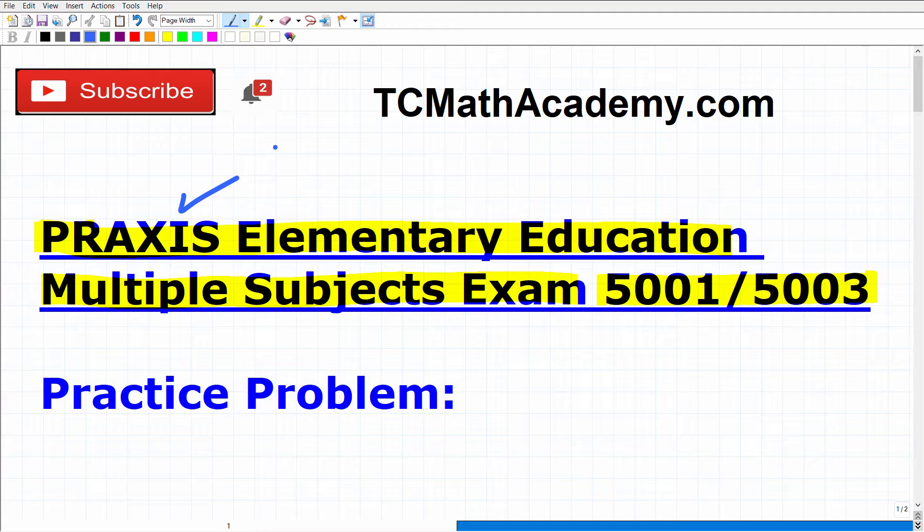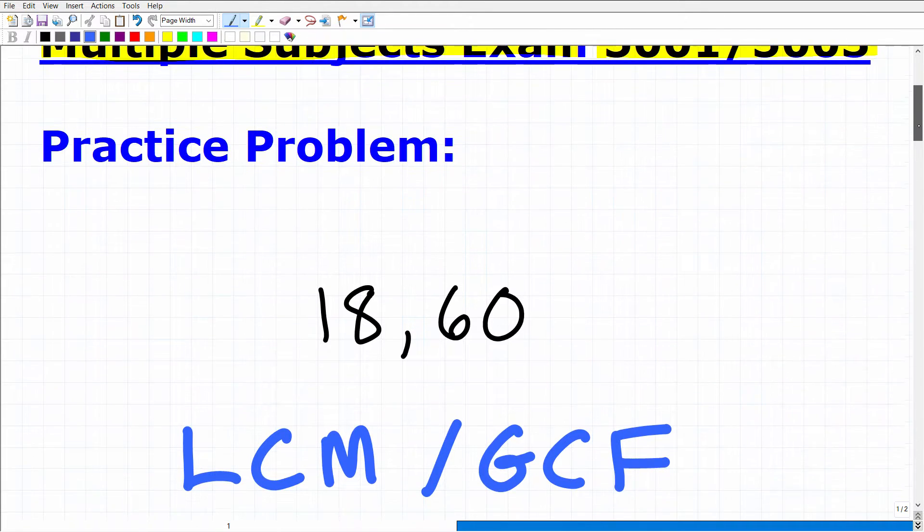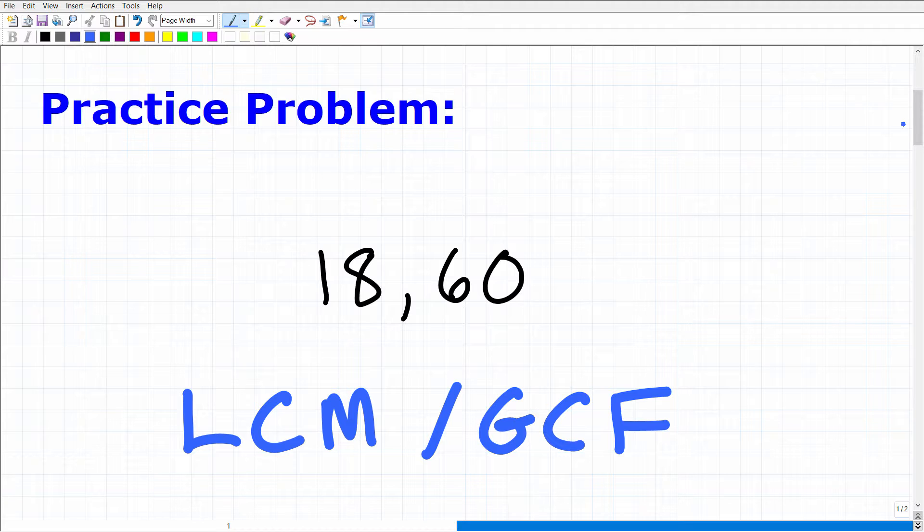And what I have for you here is a practice problem. I'll show it to you in a second that you should be able to answer pretty easily if you are fully prepared for this exam. Now, let me actually just show you the problem right now. So if you want to pause the video, you can work on it. So what we're going to be doing here, I have two numbers, 18 and 60, and I want you to find the least common multiple and the greatest common factor.